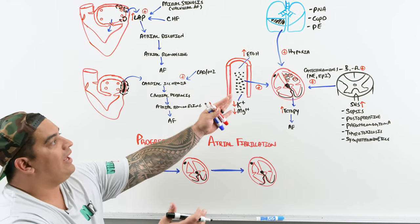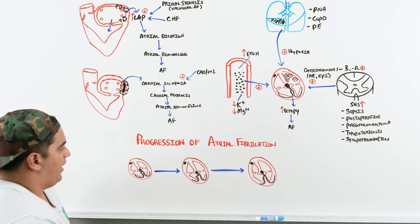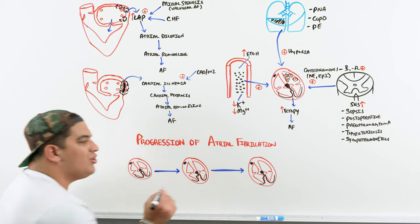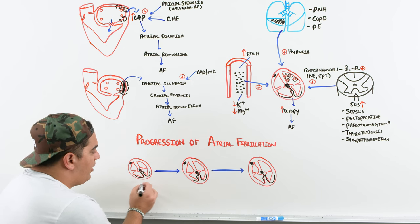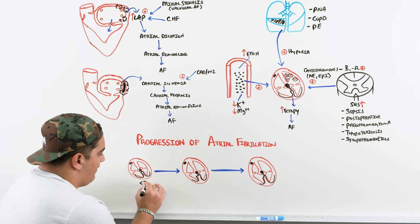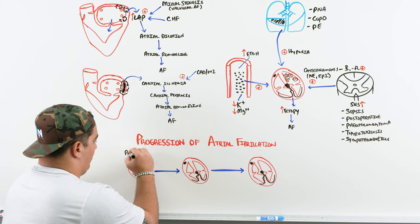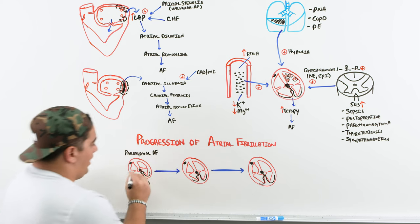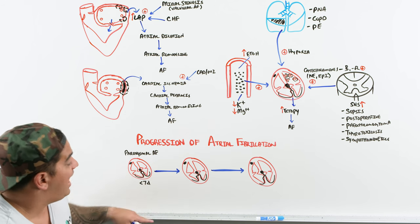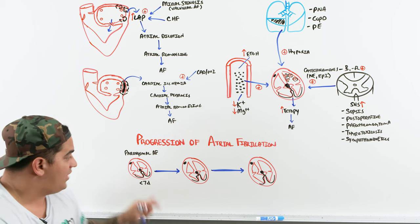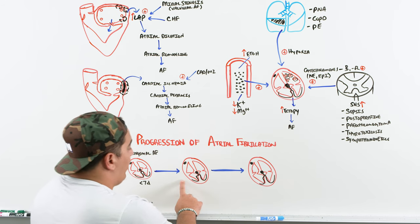When a patient develops AFib — whether from ectopy, re-entrant circuits, or remodeling — you can also classify them based on the duration. If their AFib has lasted less than seven days, this is called paroxysmal AFib. These patients usually haven't yet had significant remodeling, so they may be able to snap back out of paroxysmal AFib into normal sinus rhythm.